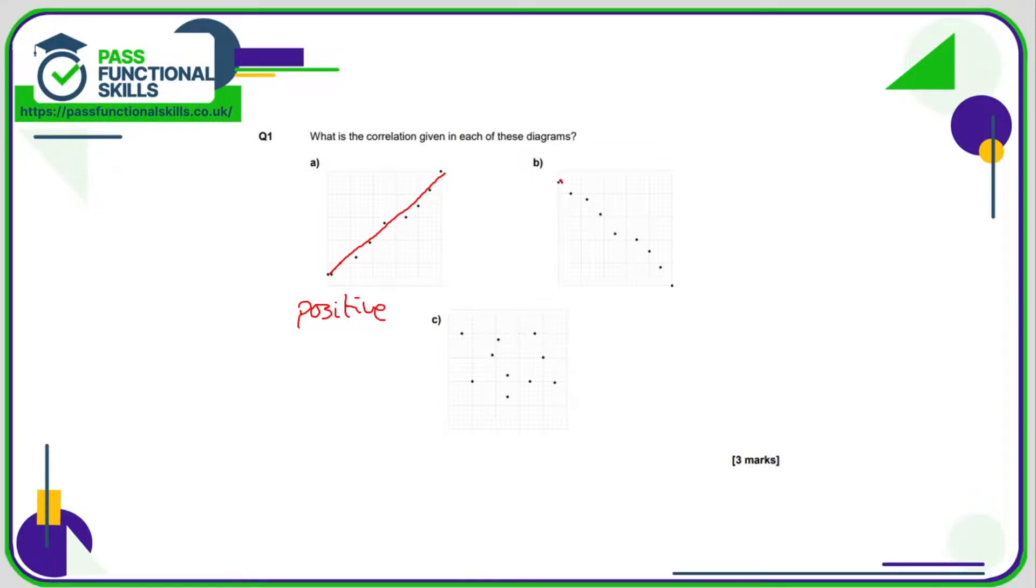B is quite similar to A except the dots are going down so the line of best fit would be going downwards so therefore that is showing negative correlation. But in C these dots are scattered almost randomly so it's impossible to do a line of best fit. Most of the dots are miles off that line so there is no correlation at all.